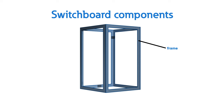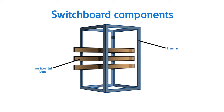The switchboard frame is the metal skeleton that houses all of the other components. The bus, which is either copper or aluminum, is mounted within this frame. The bus distributes power from the incoming cable conductors to the branch circuit devices. A horizontal bus distributes power to each switchboard section, with the standard orientation being ABC from top to bottom.